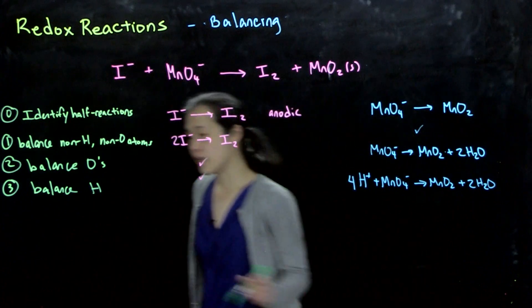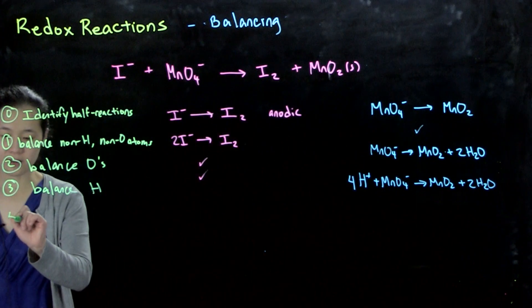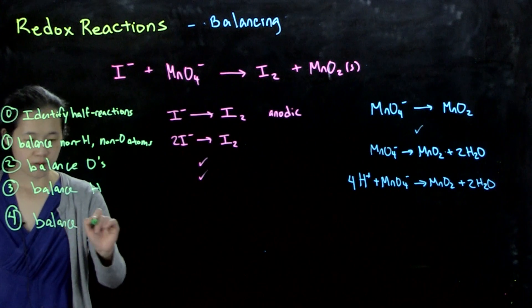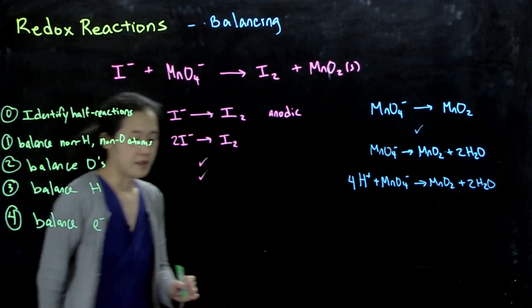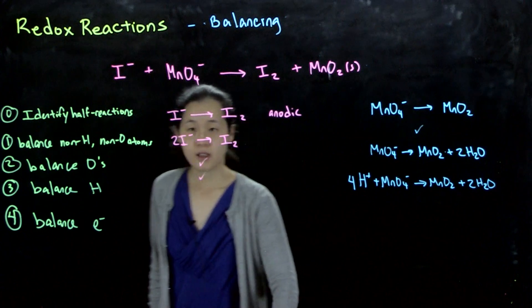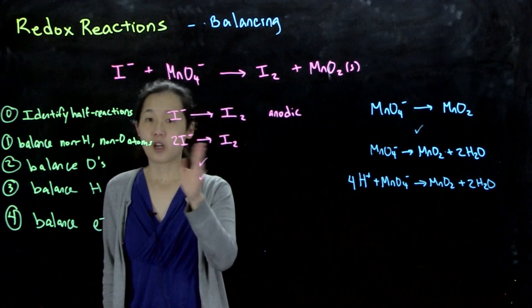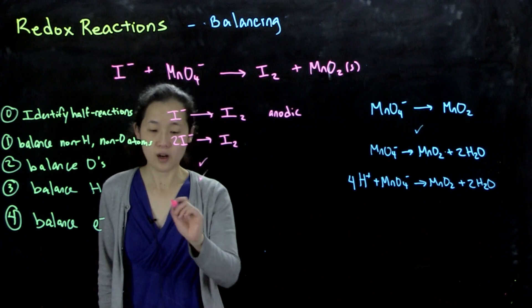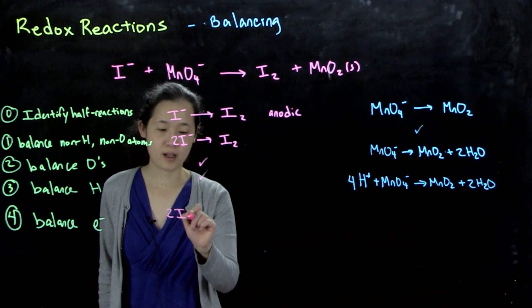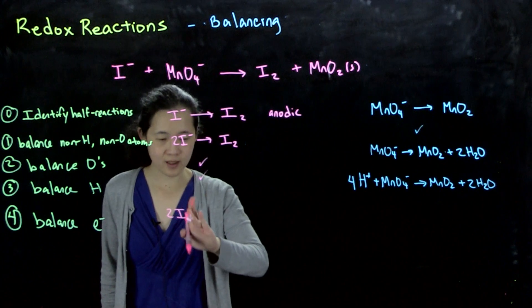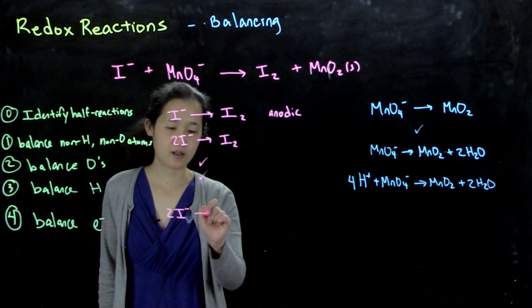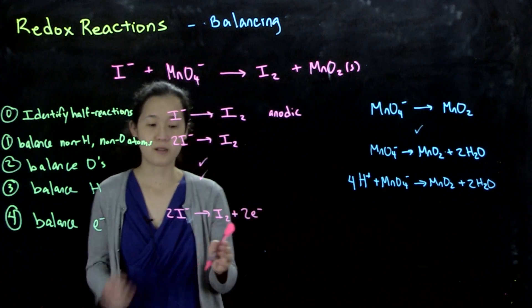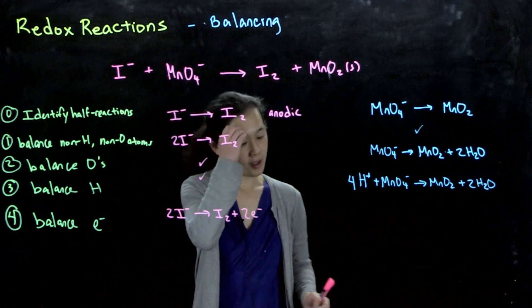Step four: we balance out electrons. For this one, we balance out charge. Here we have two negative charges on the left side, this is neutral. To balance out the charge, we add two electrons to the right. So 2I⁻ goes to I₂ plus 2e⁻. Two negative charge, two negative charge. Great.